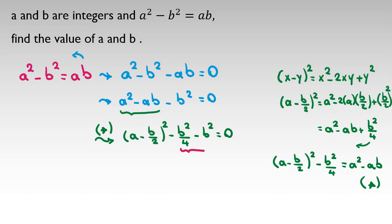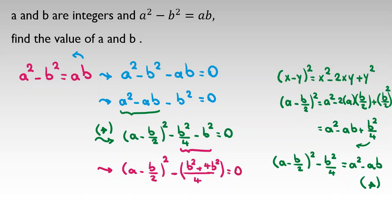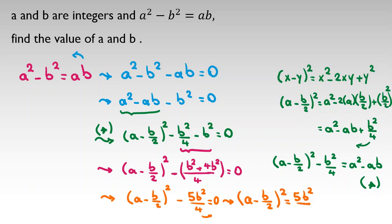Simplifying the b squared terms with a common denominator of four: negative b squared over four minus b squared equals negative b squared minus 4b squared over four, which is negative 5b squared over four. So the equation becomes (a minus b/2) squared minus 5b squared over four equals zero, which gives (a minus b/2) squared equals 5b squared over four.